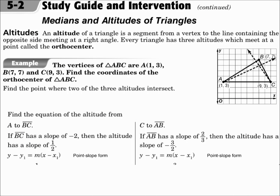The final special segment in a triangle is called the altitude. The altitude goes from a vertex to the opposite side, and it hits the opposite side at a right angle.